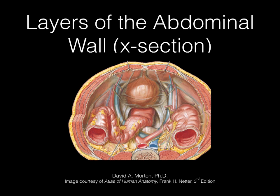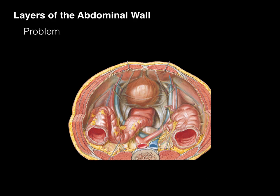Layers of the abdominal wall cross-section. A problem with body wall anatomy is that a student of anatomy, as they start learning the abdominal wall, becomes quickly overwhelmed by the litany of the terminology and they choke on the jargon.